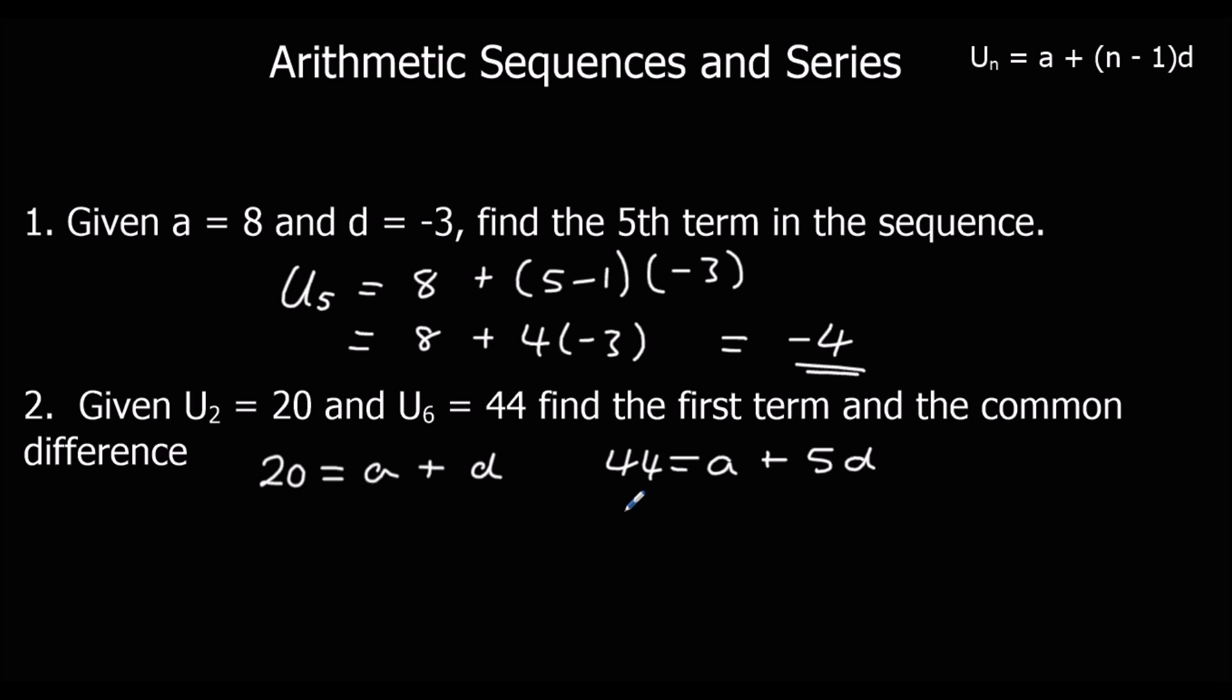We've got simultaneous equations. I'm going to write the first one under the second one. Take away. 24 equals 4, d. Divide both sides by 4, d is 6. 20 equals a, plus 6. So a must be 14.